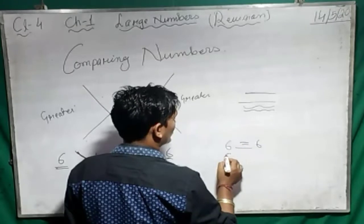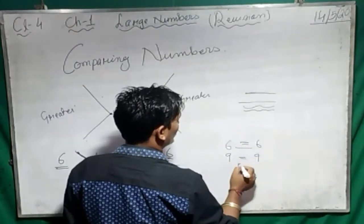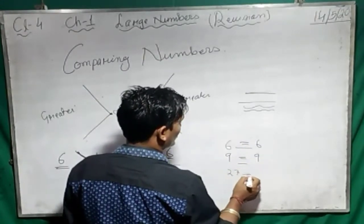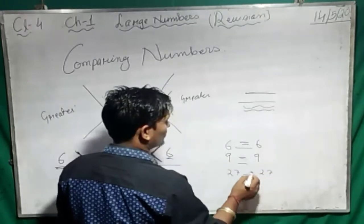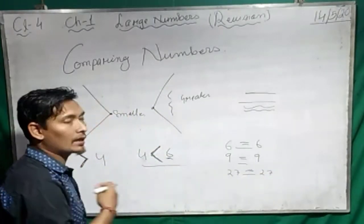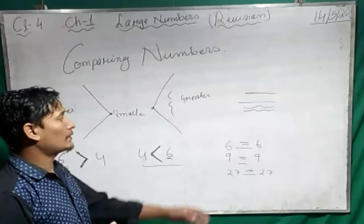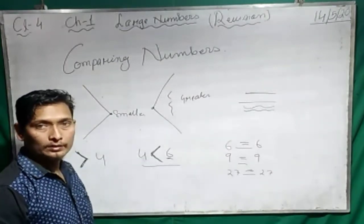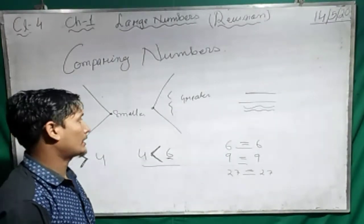The equal to symbol is always used when the digits are the same. So 6 equals 6, 9 equals 9, 27 equals 27. This shows that the values on both sides are the same, which is why we use the equal symbol. Clear, children?